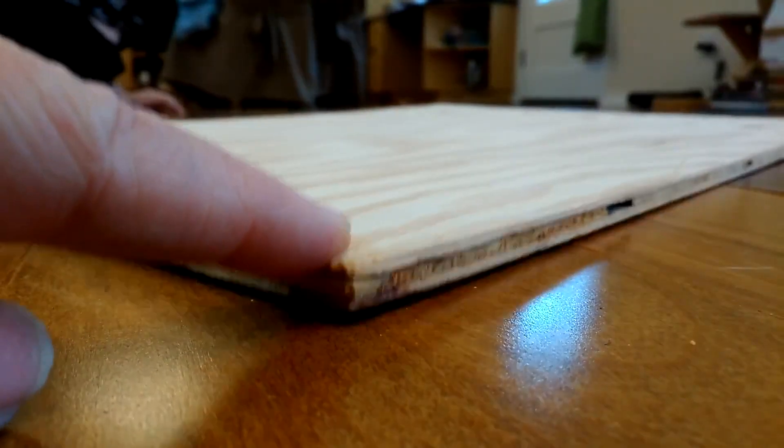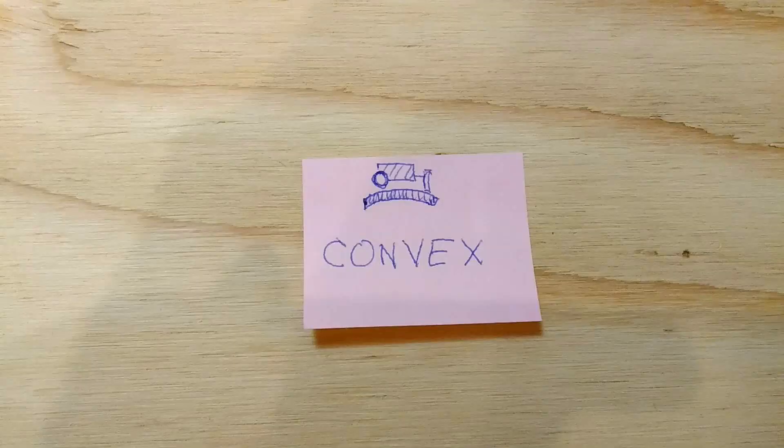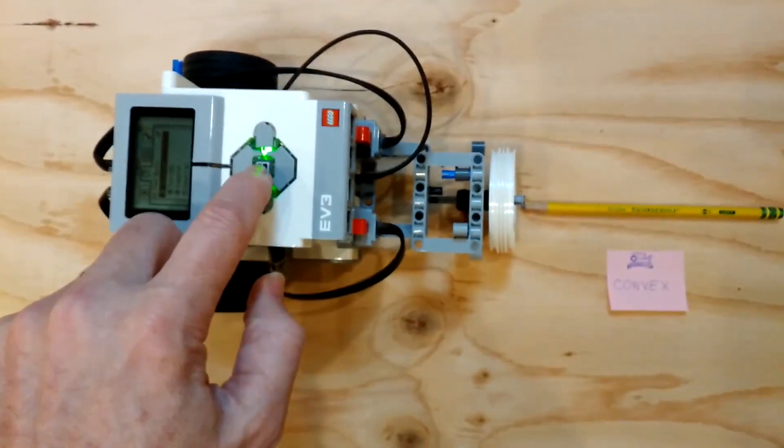This piece of plywood is somewhat curved, it doesn't lie flat. If I turn it over so the convex surface is facing up, and run the robot, it works about like it did before, sometimes going a little farther.